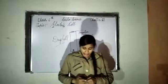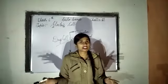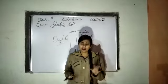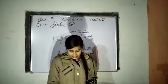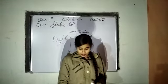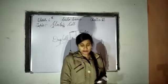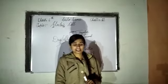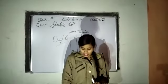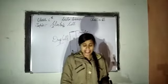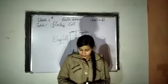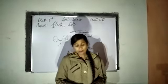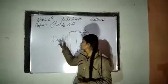Dry cells produce current at low voltage, so the power of electricity is lower. Dry cells do not have any liquid in them, which is why we can safely handle and use them. They are widely used in devices such as LED torches, transistor sets, alarm clocks, cameras, tape recorders, and other places.